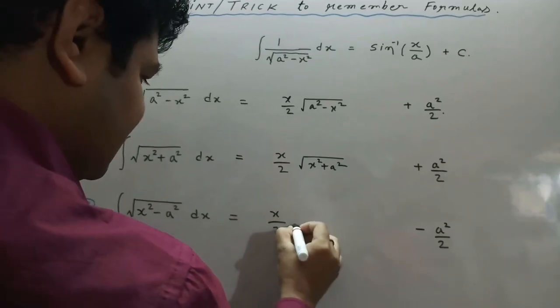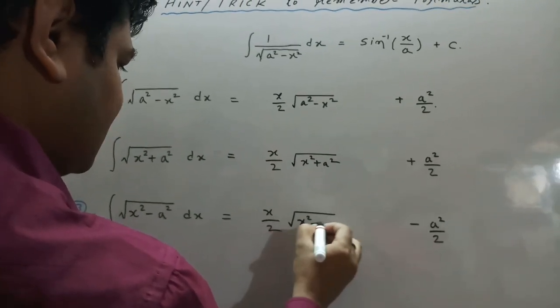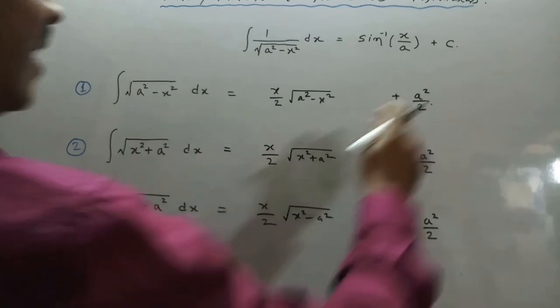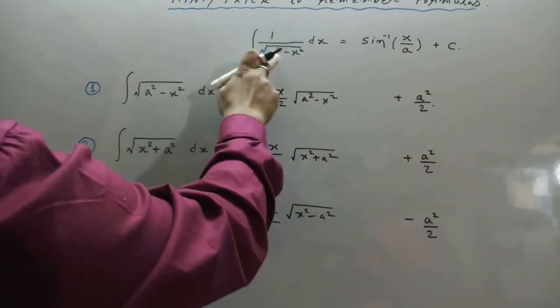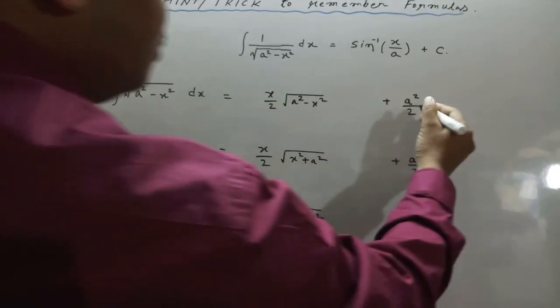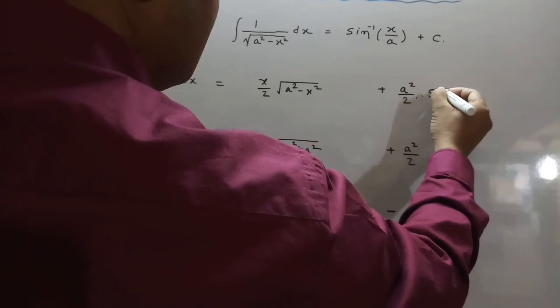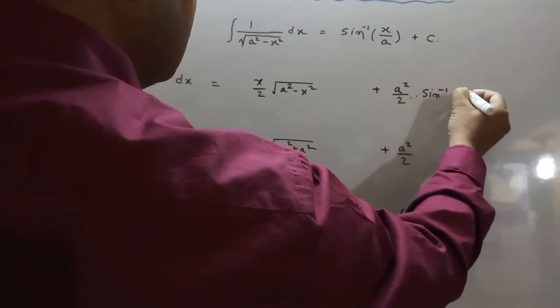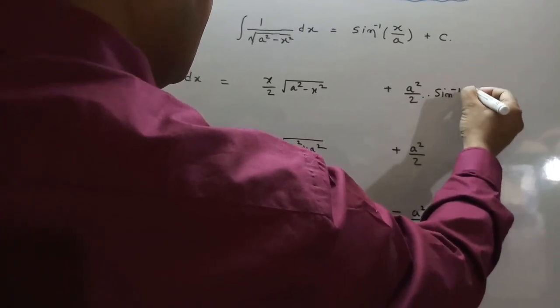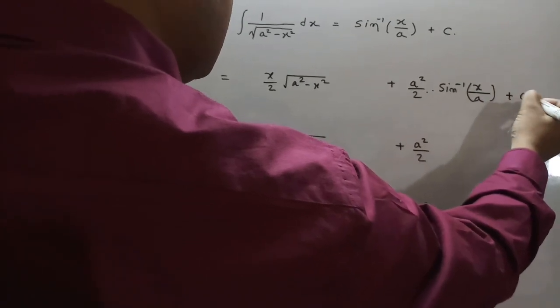This function √(x² - a²) is also as-is. And here, these are the same pattern, so write sin⁻¹(x/a) + C.